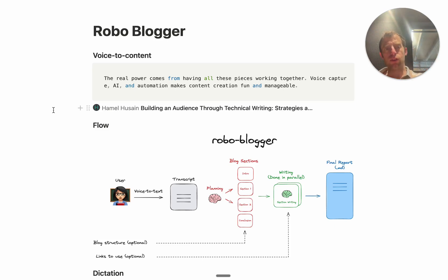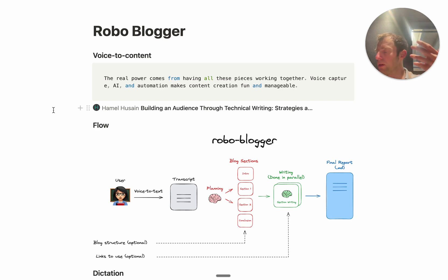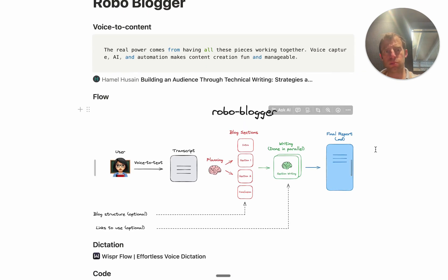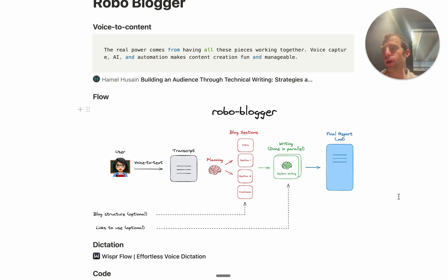Hey, this is Lance from LangChain. Over the past few months, we've seen more and more AI applications that use voice as the input. One great example is what Hamel Hussain laid out in his recent blog post talking about voice-to-content pipelines — how to go from a voice recording of what you want to write to a final finished product. I'm going to show you how to do that from scratch today, applied to blog writing, which we do all the time at LangChain. The cold start problem in particular is very tedious with blog writing — how do you go from thoughts in your head to a first high quality working draft?